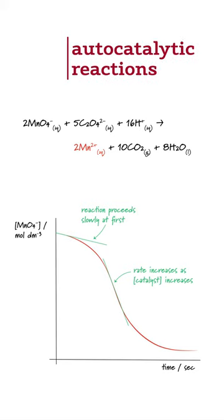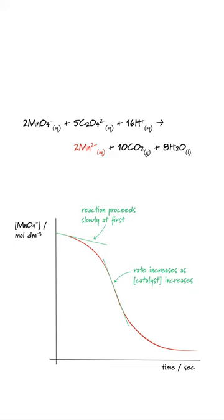This is an example of an autocatalytic reaction where one of the products, in this case the manganese-2 ions, act as a catalyst. Now the shape of the graph makes much more sense.